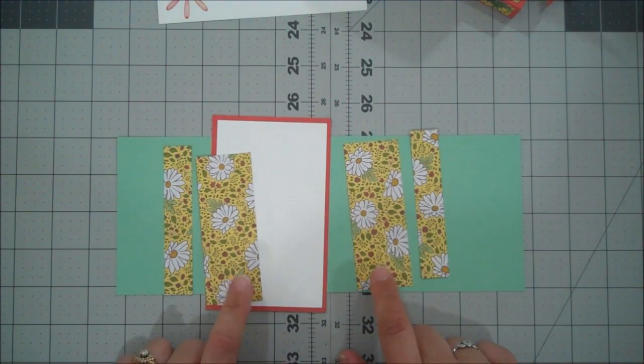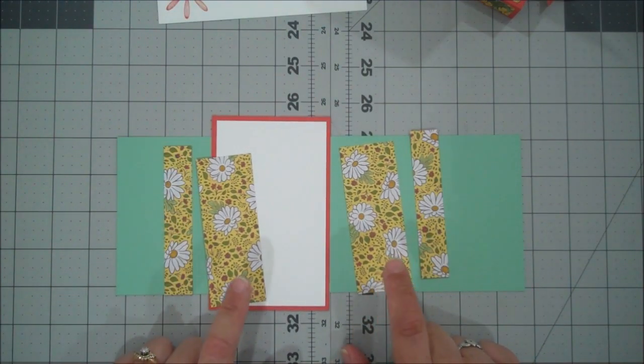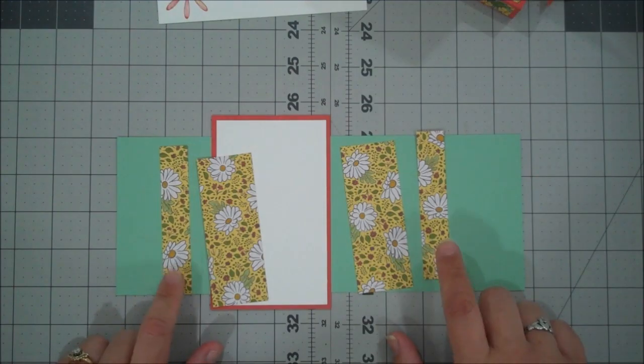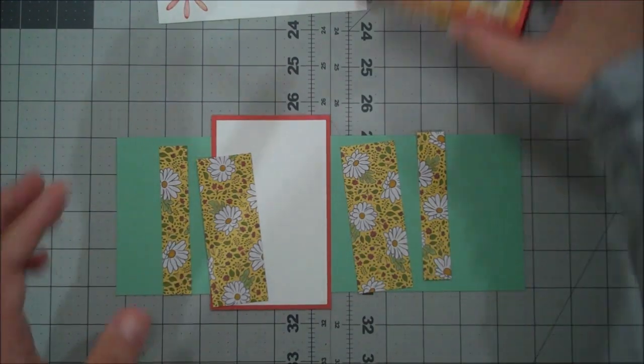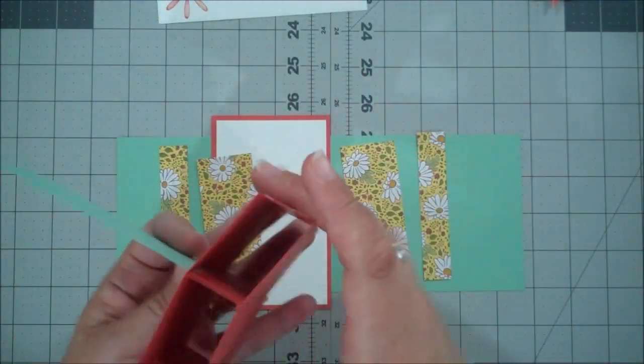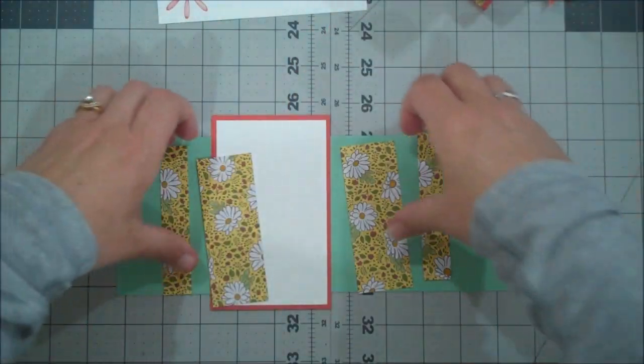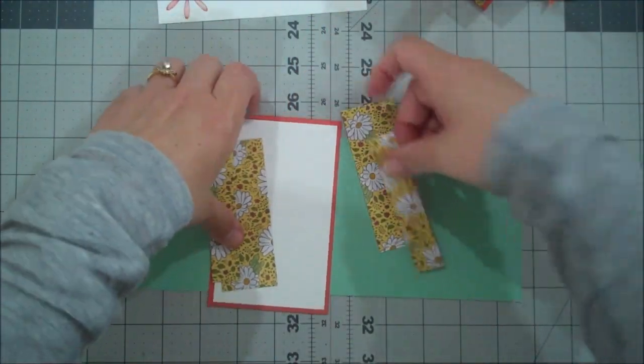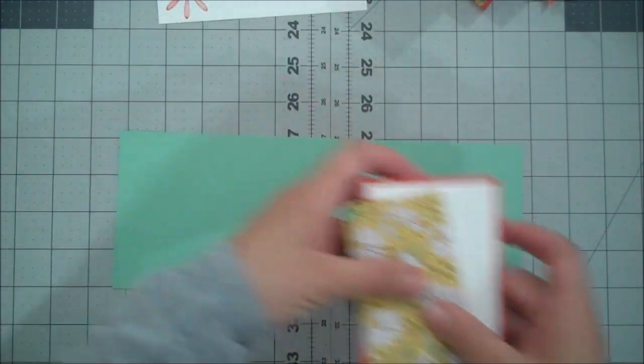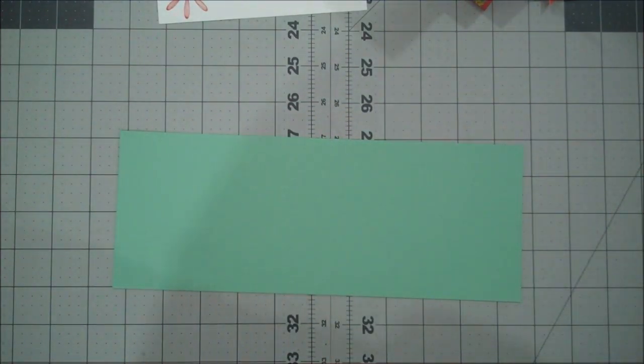And then I have a few pieces of the ornate designer series paper. So we have two that are cut one and a half by four. And then we have two that are cut three quarters by four. And that's going to be to decorate our base. And then we'll also use one of our medium whisper white envelopes for this.